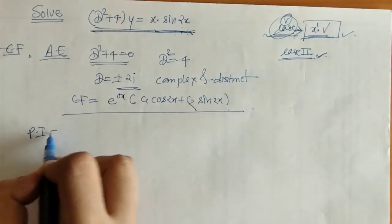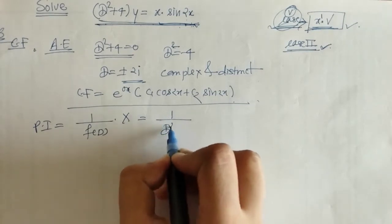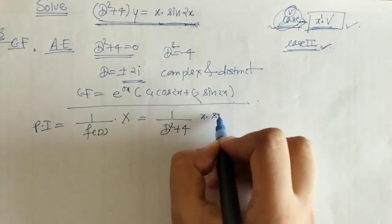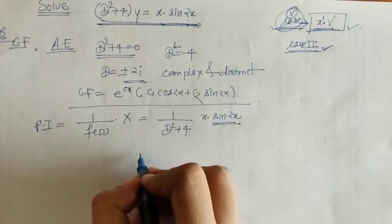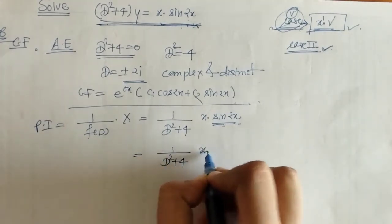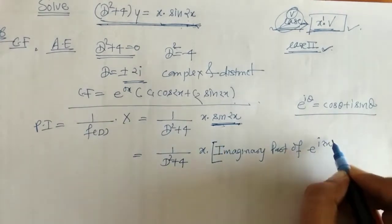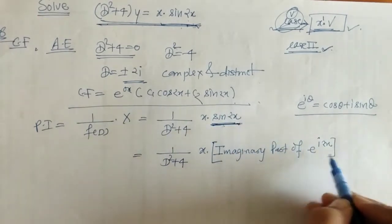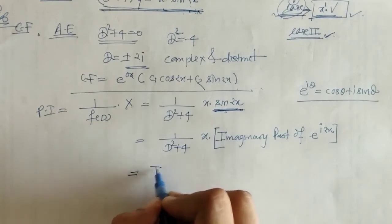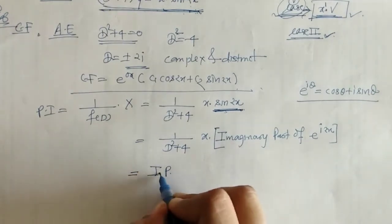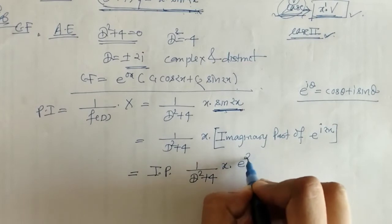Now we have to find PI. We have the formula for PI, and we write down f(D). Here we have sin(2x), so we write sin(2x) by Euler's formula as the imaginary part of e raised to 2ix. We can take the imaginary part outside, so here we have x into e raised to 2ix.